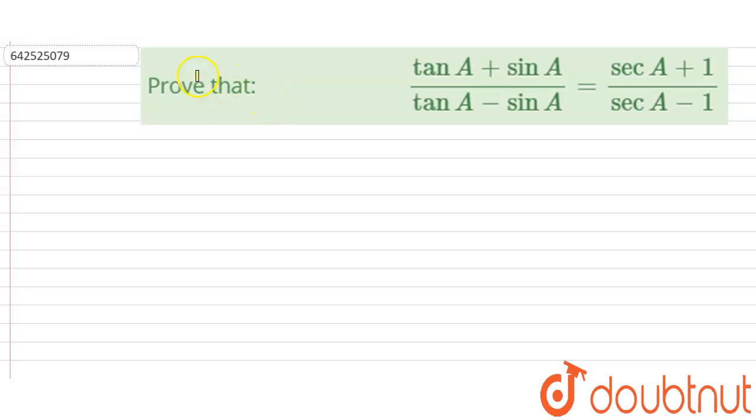Hello everyone, let's start this question. We need to prove that (tan A plus sin A) divided by (tan A minus sin A) equals (sec A plus 1) divided by (sec A minus 1). So this we need to prove.